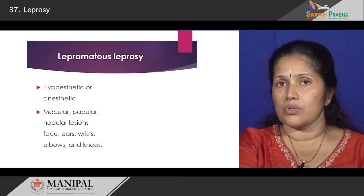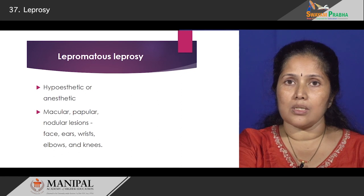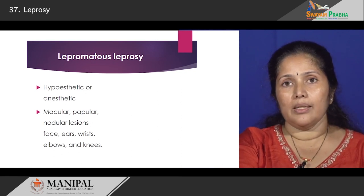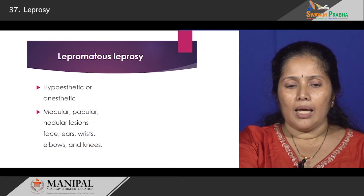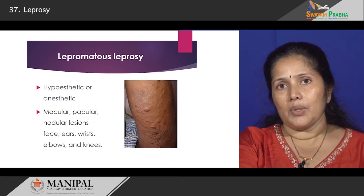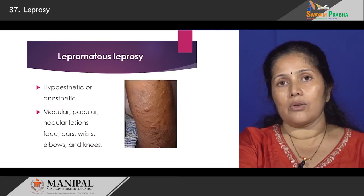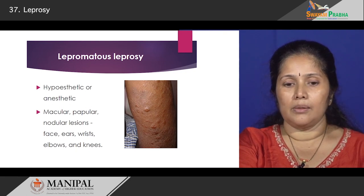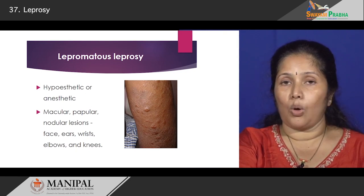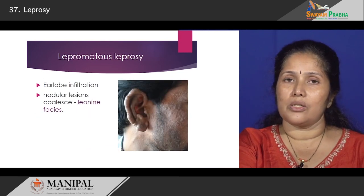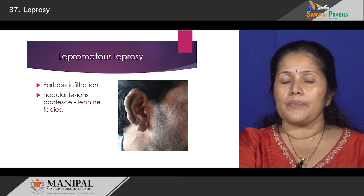How do these lesions look? They are either macules, papules, or nodules. The sites at which these lesions appear include the wrist, the ear lobes which become nodular, the elbows, and the knees. These are the different sites where you could see lesions in the patient.